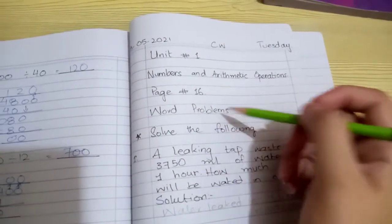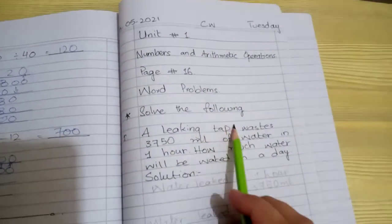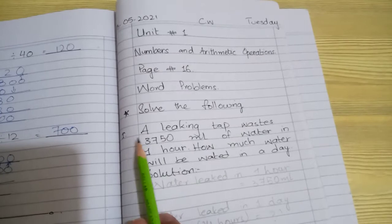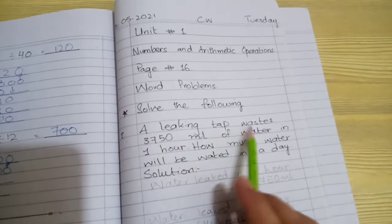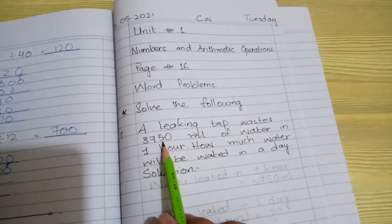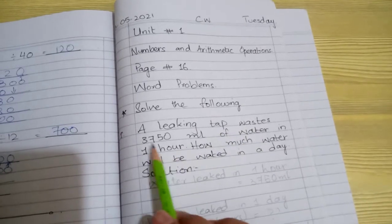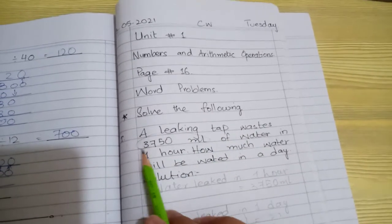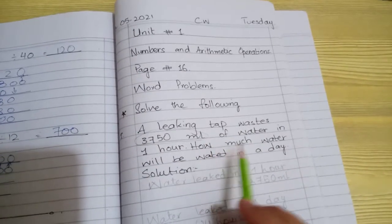Word problem number 1: A leaking tap wastes 3750 ml of water in one hour. How much water will be wasted in a day?